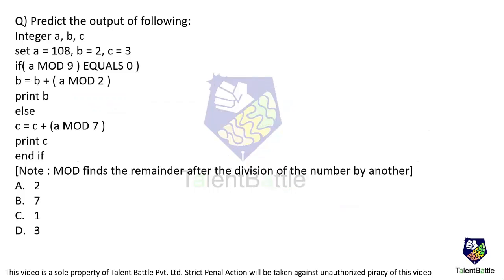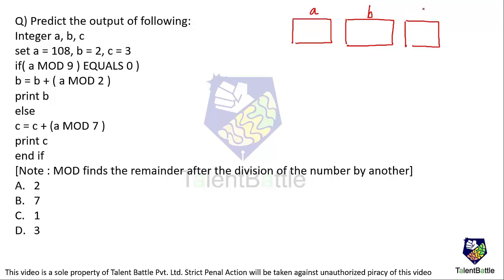Let's move on to the actual content. The first question asks you to predict the output of the following pseudocode. Three integer values are given: a, b, and c. The initialization is: a = 108, b = 2, and c = 3.